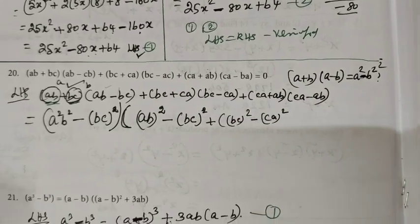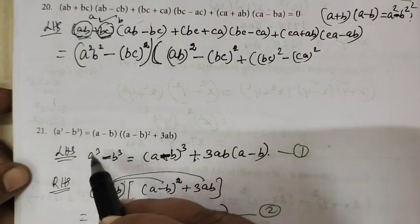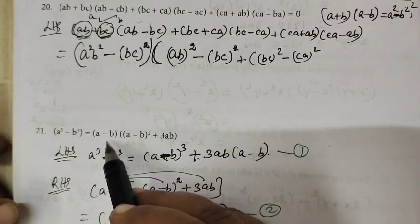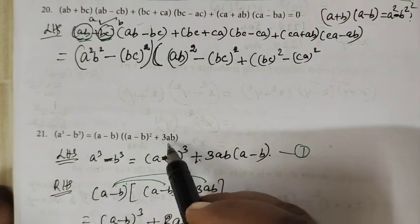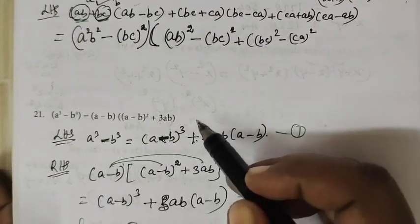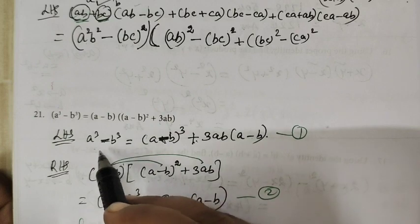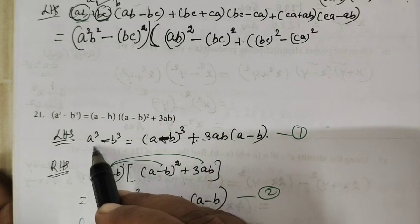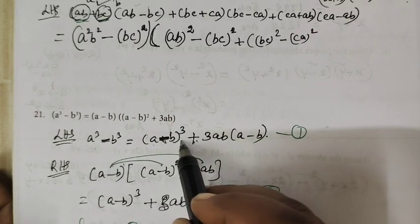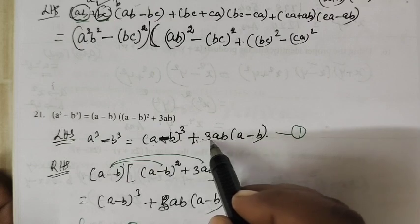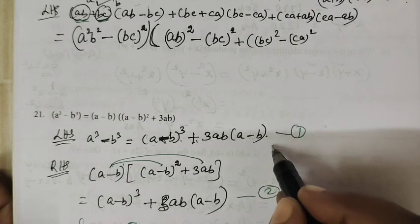So now Question number 21. a³ − b³ = (a − b)(a − b)² + 3ab. That is, a³ − b³ = (a − b)³ + 3ab(a − b). This is the identity.